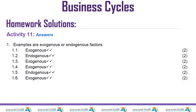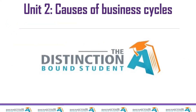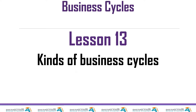Now let's move right into unit two. The previous lesson covered causes — endogenous and exogenous — so we continue with unit two. This is lesson number 13. In this lesson we are going to look at the kinds of business cycles.